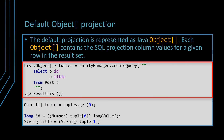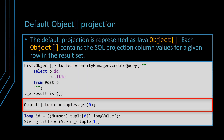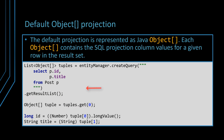By default, JPA maps the SQL projection records to Java object arrays. The projection column values are stored in the Java object array according to their position in the SQL Select clause. In our case, the ID column becomes the first element of the object array, while the title is stored as the second element.